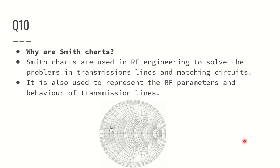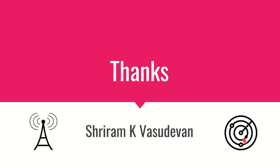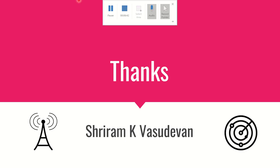What is a SMIC chart and why are SMIC charts used? SMIC charts are used in RF engineering to solve problems in transmission lines and matching circuits. They are also used to represent RF parameters and the behavior of transmission lines. A SMIC chart is presented which you should study separately to understand it better. The first 10 questions are covered and I hope it was useful. We will come up with the next set of 10 questions shortly.